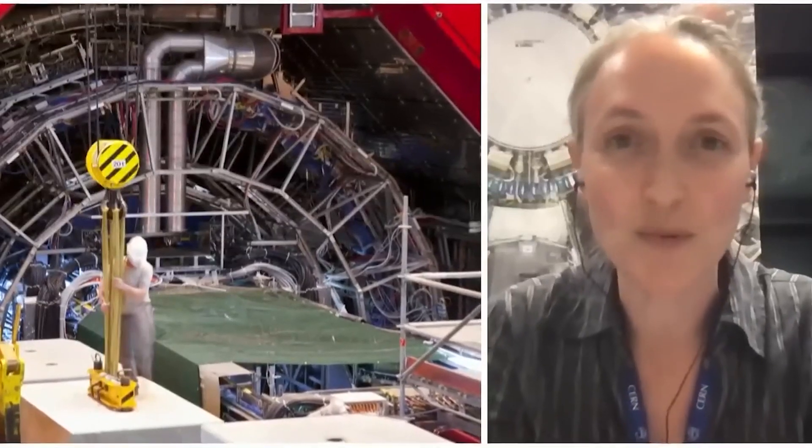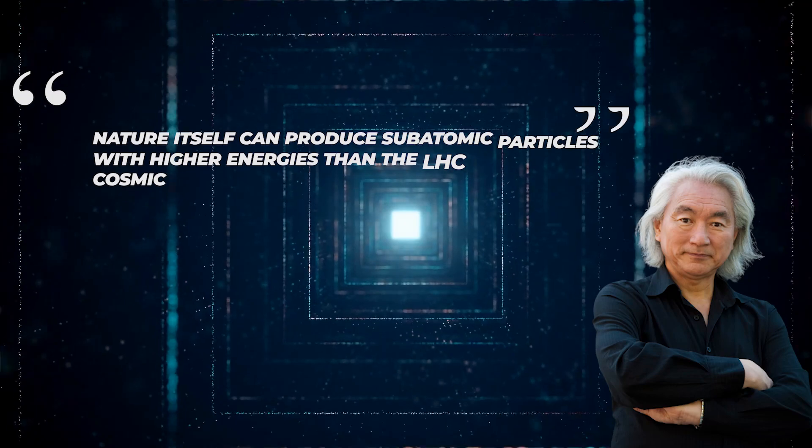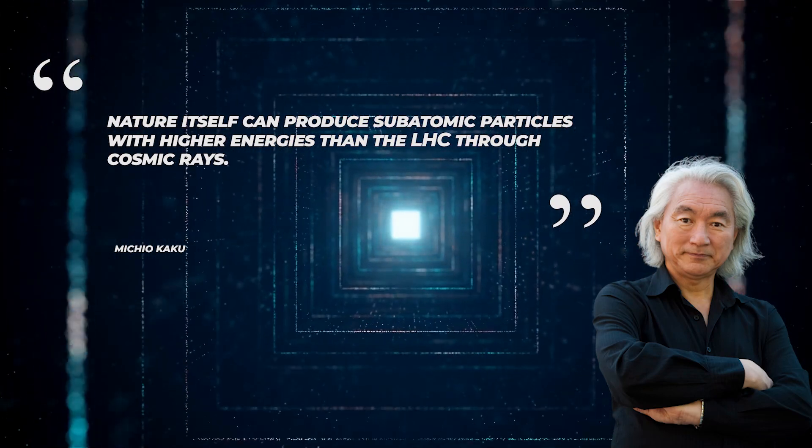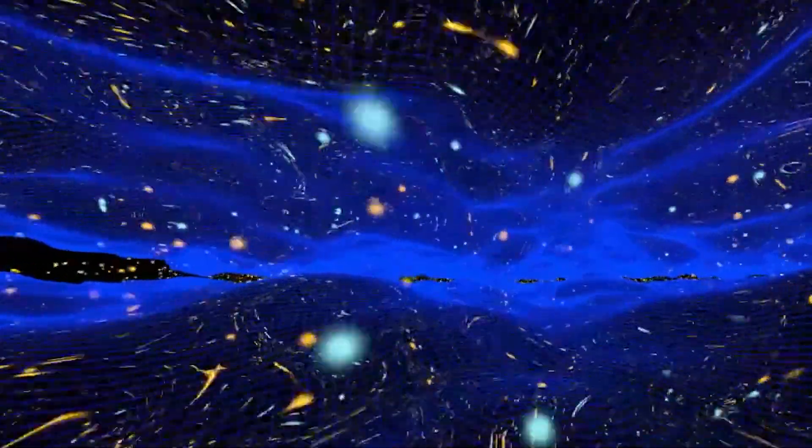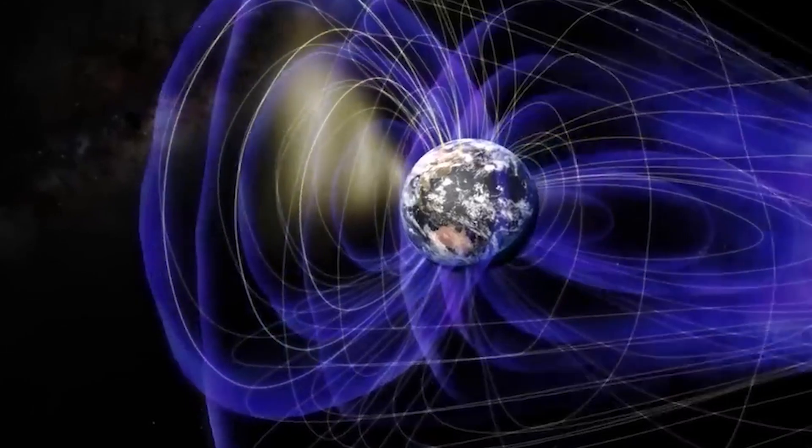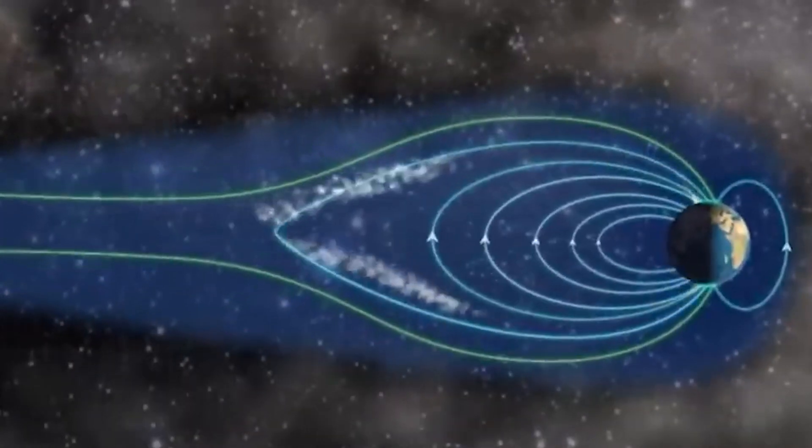Firstly, he explains that nature itself can produce subatomic particles with higher energies than the LHC through cosmic rays. These high-energy particles, accelerated to astronomical levels by intense magnetic and electric fields in space, have been bombarding Earth for billions of years, yet our planet has not been devoured by them.